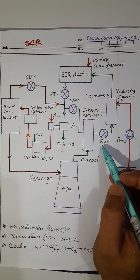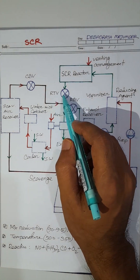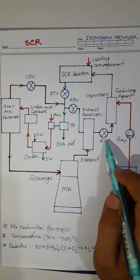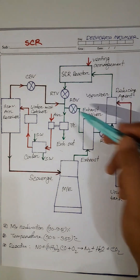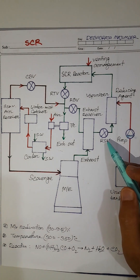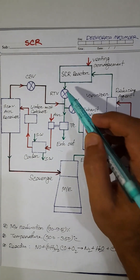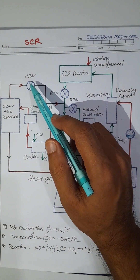You can see RSB, RBB, RTB, and CBB — all are control valves. These valves and this pump are controlled by the SCR control unit. RSB means reactor sealing valve, RBB is reactor bypass valve, RTB is reactor throttling valve, and CBB is cylinder bypass valve.